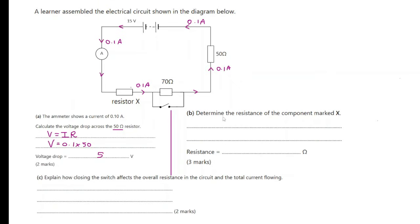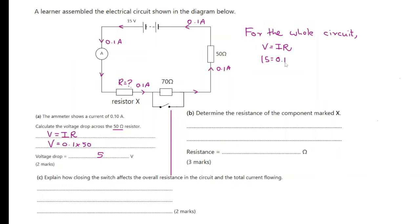Part B. Determine the resistance of the component marked X. To do that, we need to find the resistance of the whole circuit. So let's write V equals IR for the whole circuit. The voltage, the EMF, is 15 volts, and the current is 0.1 amps. We need to find the total resistance — let's call it RT.